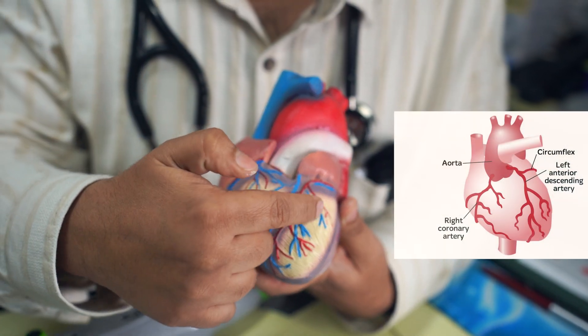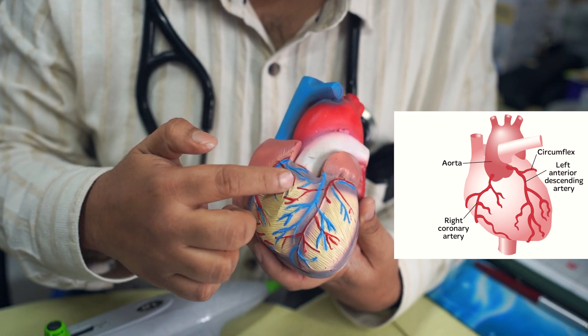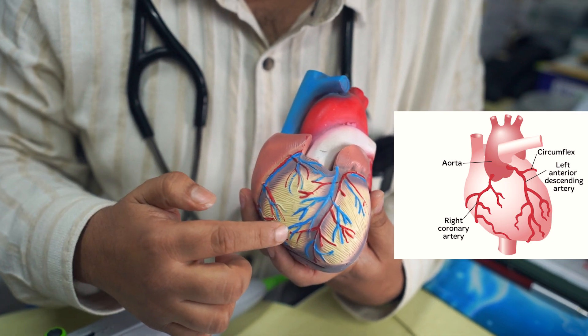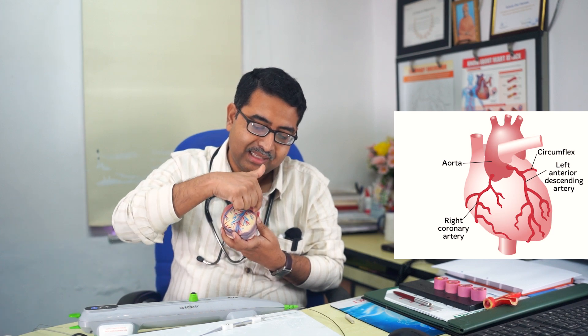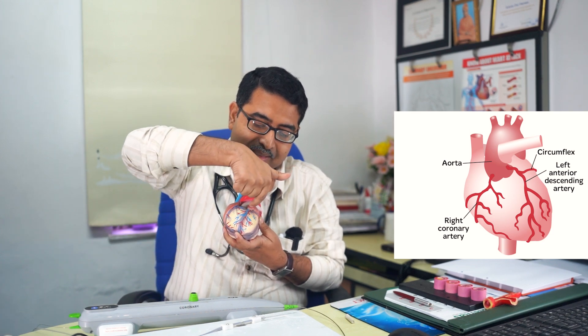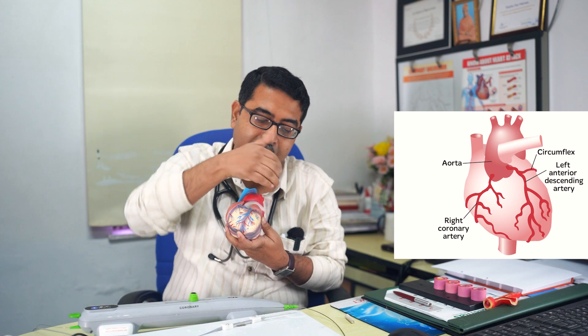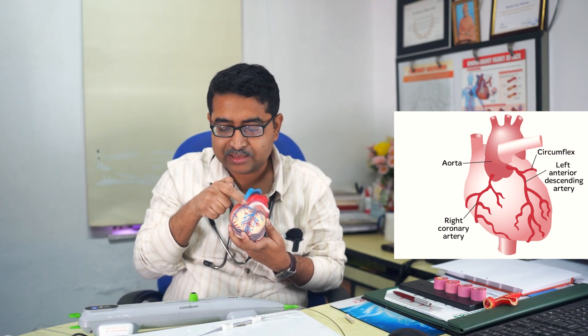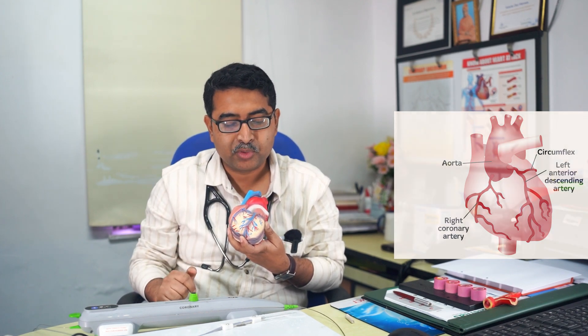These red ones are the coronary arteries. This is the main left-sided coronary artery which we call LAD. This is the LCX, the left-side artery going to the back of the heart, and this is the RCA, or the right coronary artery. So there are basically 3 coronary arteries giving blood supply to the muscles.